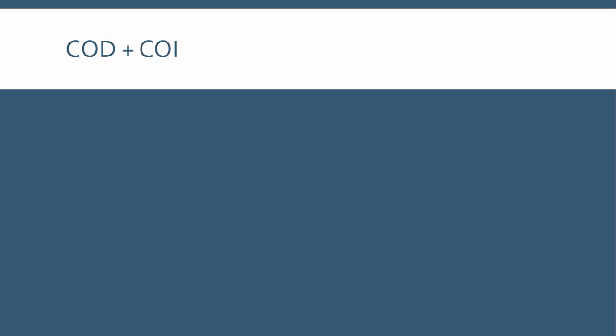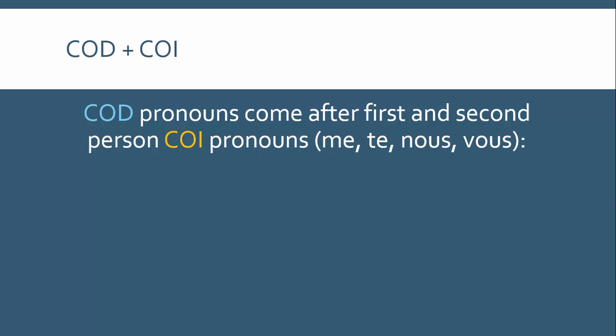The only thing that remains is what we do when we have both a direct and an indirect object pronoun. The rules are a little confusing. Rule one: direct object pronouns come after first and second person indirect object pronouns. For example, 'ils me le donnent' — they give it to me. Here 'me' is a first person indirect object pronoun, and so 'le,' the direct object, comes after it. For me, it's far easier to know a correct sentence and then apply that pattern to others, such as 'elle nous l'a dit' — she told us the truth — where 'nous' is the indirect and 'l'' stands for 'la vérité' (feminine), so the past participle 'dit' agrees with it but not with 'nous,' which is indirect.